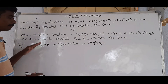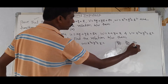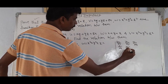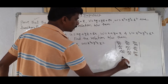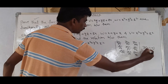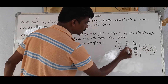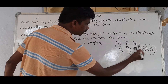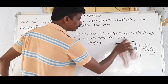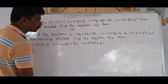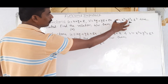We write the Jacobian as J = ∂(u,v,w)/∂(x,y,z). The 3×3 determinant has first row: ∂u/∂x, ∂u/∂y, ∂u/∂z; second row: ∂v/∂x, ∂v/∂y, ∂v/∂z; third row: ∂w/∂x, ∂w/∂y, ∂w/∂z.